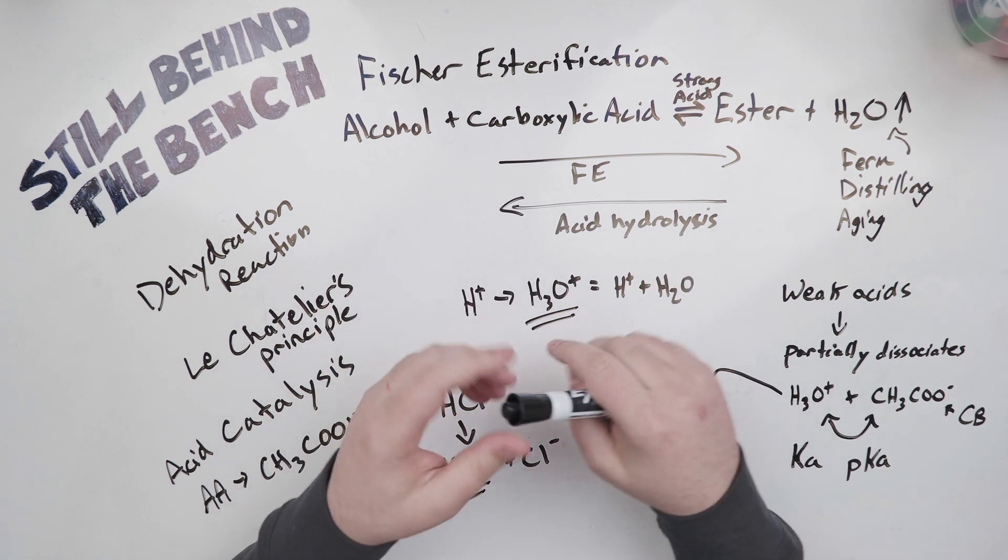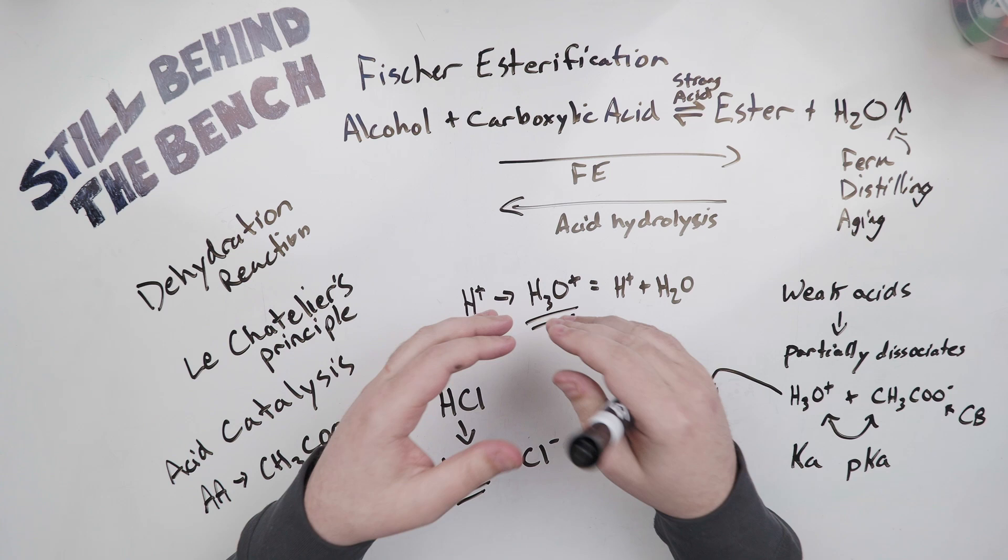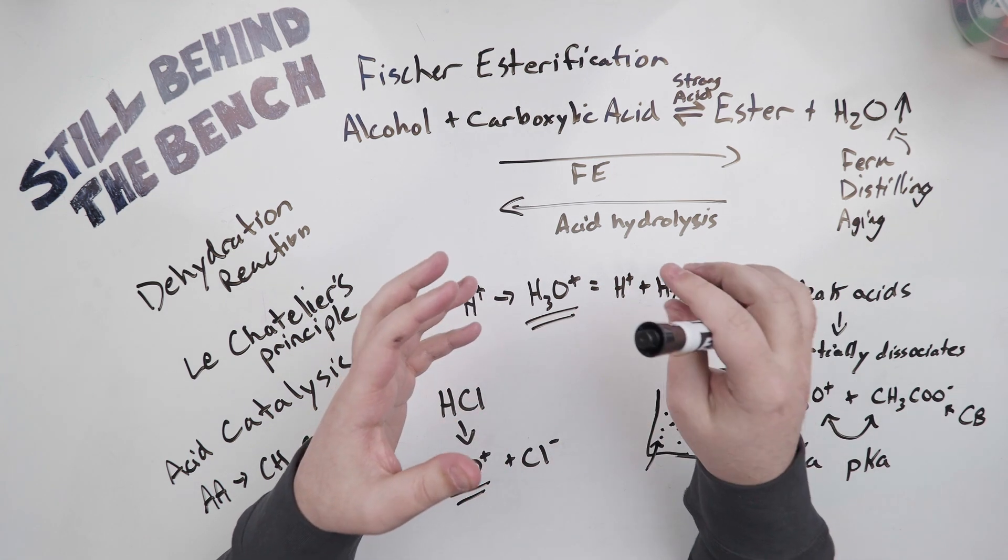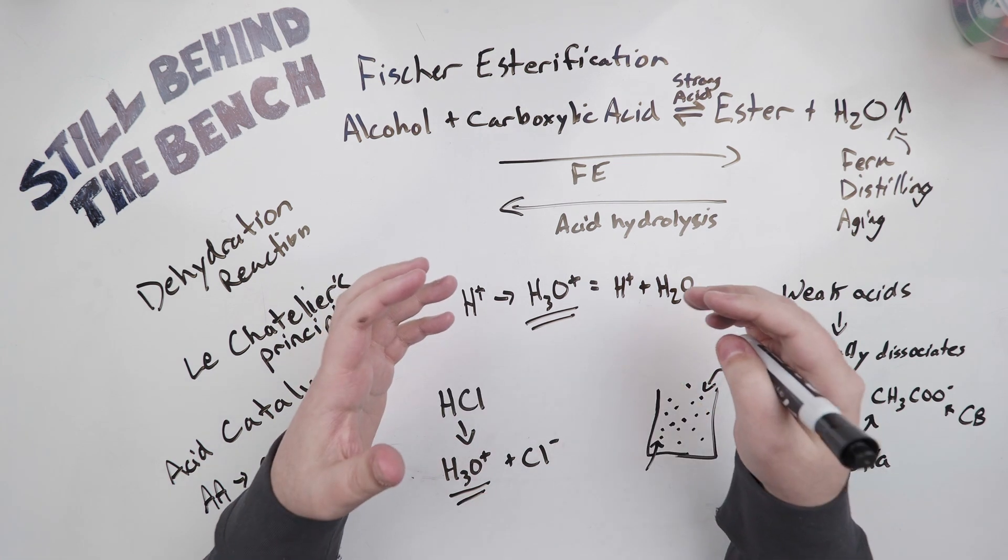True, it is an acid and it does produce hydronium ions. But the carboxylic acid will be what is termed a weak acid. The key characteristic of a weak acid is that it doesn't completely disassociate when added to the solution. So what does this mean?